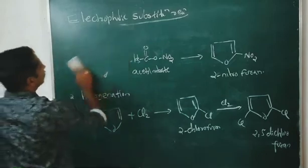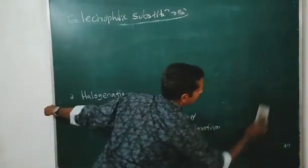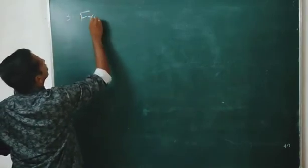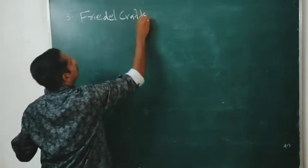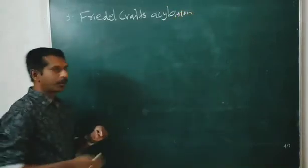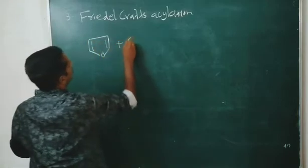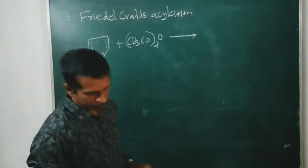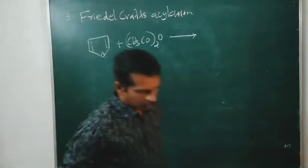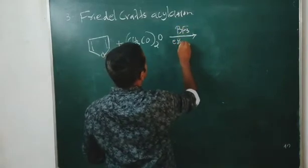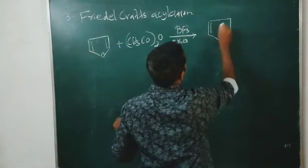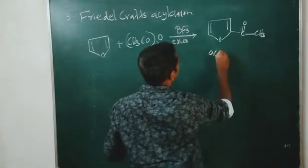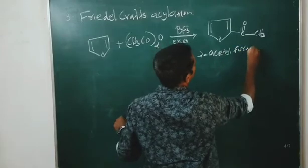Third electrophilic substitution: Friedel-Crafts acylation. Furan reacts with acetic anhydride (CH3–CO–O–CO–CH3) in the presence of BF3 ether, and we get 2-acetylfuran.